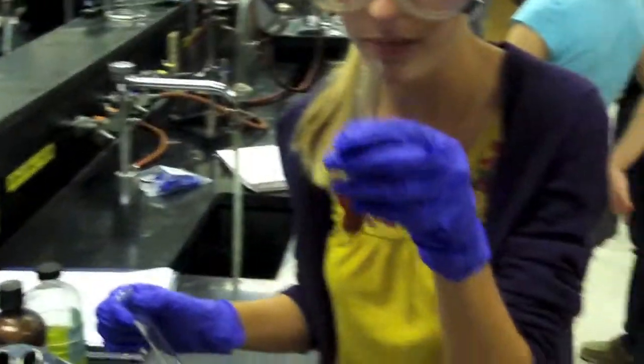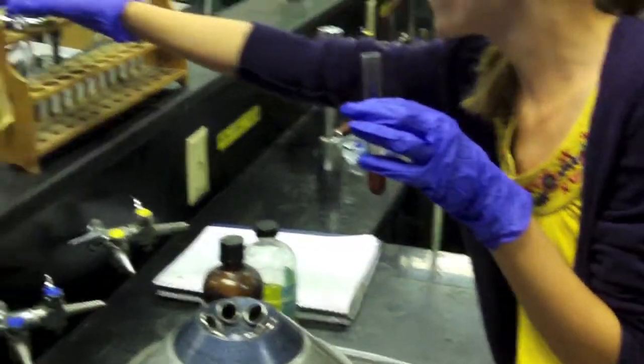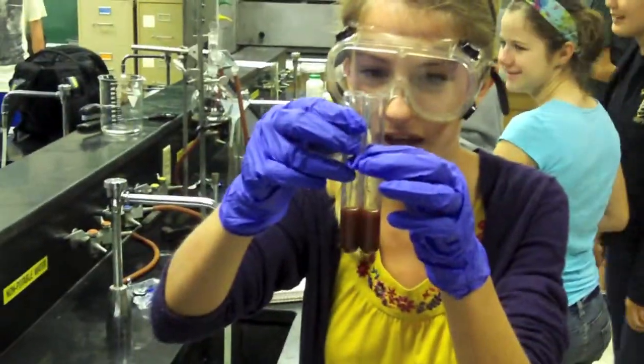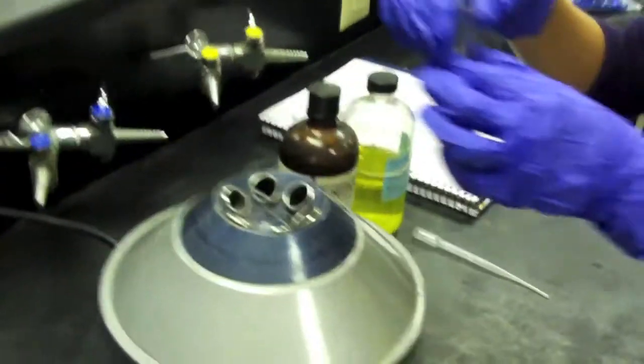You want the same amount of substances in this one as your other test tube. So here's the other one. They should be about equal. Then you can place them in the centrifuge.